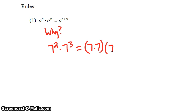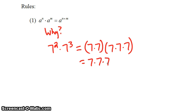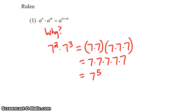7 squared means this, and 7 cubed means this. If we get rid of the parentheses, what we have are a total of five sevens, so we have 7 to the fifth power. You see why we added the 2 plus the 3 — we had two sevens here and three sevens here, so we have a total of five sevens.